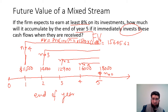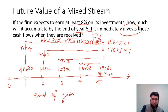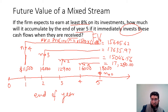For n equals three, using the same formula with the $14,000 cash flow, we get $17,635.97. For the third cash flow we get $15,046.56. For the fourth cash flow of $16,000 we get $17,280. The last cash flow of $18,000 remains the same since n equals zero.